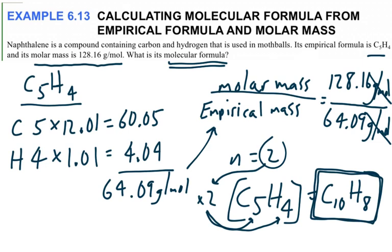If you have time and want to check your answer, you can always find the molar mass of the molecular formula — I promise it's going to be right there at 128.16; it comes out to about 128.18, but that's due to rounding and close enough. A way to check is that the molar mass of the molecular formula will equal the given molar mass from the question. Notice in this problem step one was done — the empirical formula was given. Now let's look at a problem where we do everything from scratch.